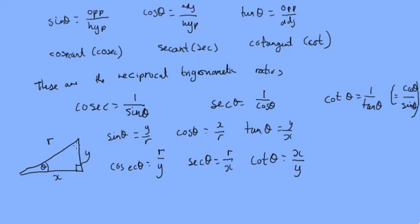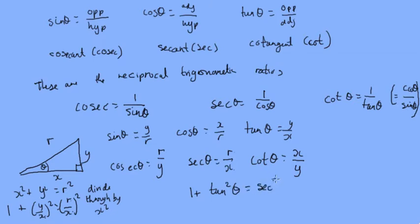Now, let's take this a step further. We know from Pythagoras that x squared plus y squared equals r squared. Let's divide through by x squared. That gives us 1 plus y over x squared equals r over x squared. But y over x is tan, and r over x is sec. So, what we've just shown here is 1 plus tan squared theta equals sec squared theta.